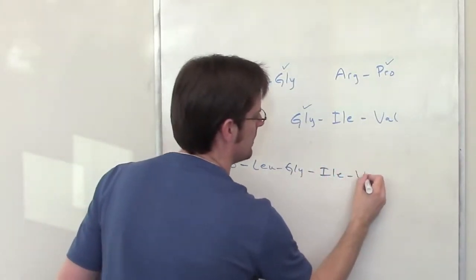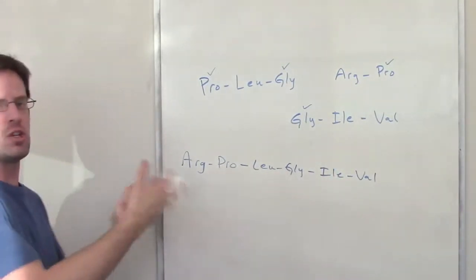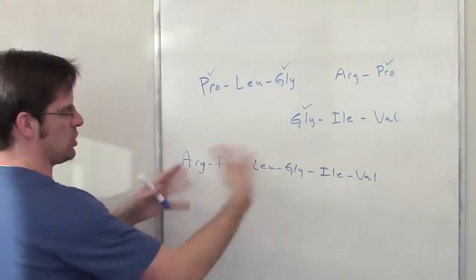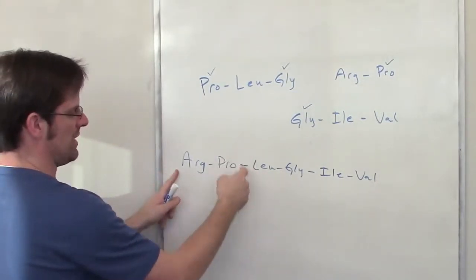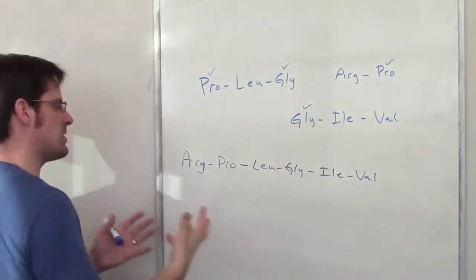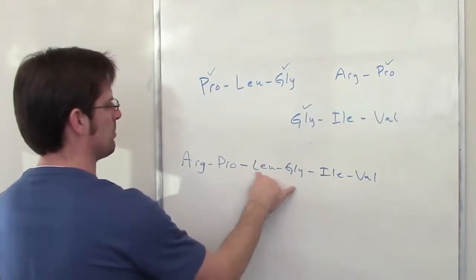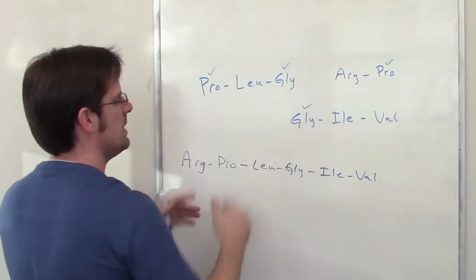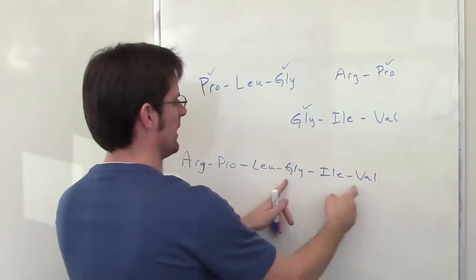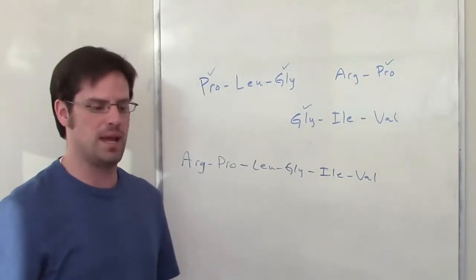What must have initially happened is we had this peptide getting cleaved by acid. Some cleavage occurred here and gave a fragment with arginine-proline. Some cleavage occurred here and gave proline-leucine-glycine, and some cleavage happened here, giving glycine-isoleucine-valine. So that is the original sequence of the full peptide.